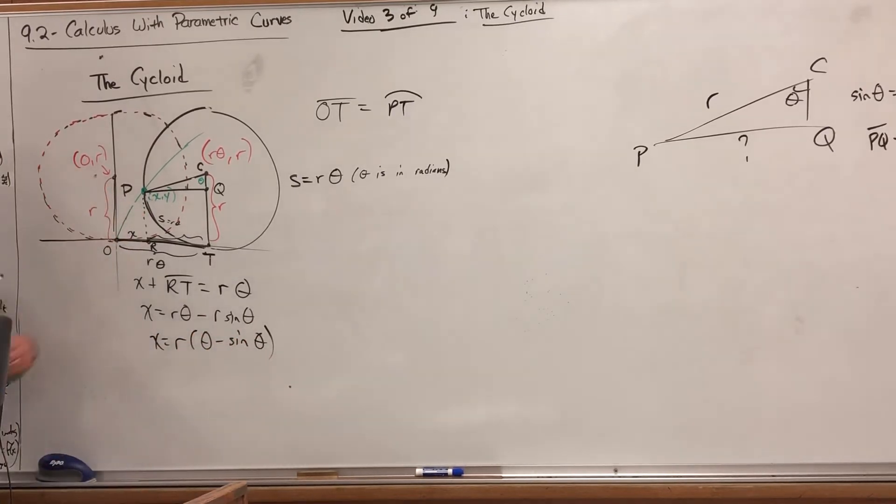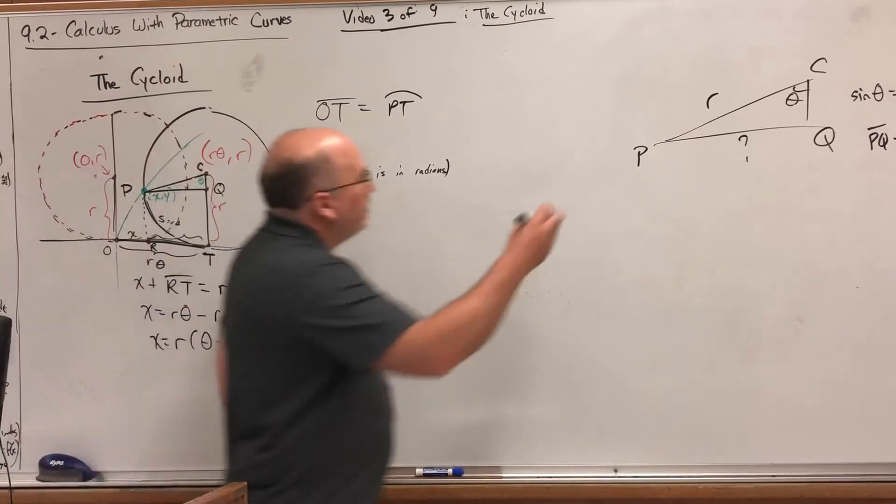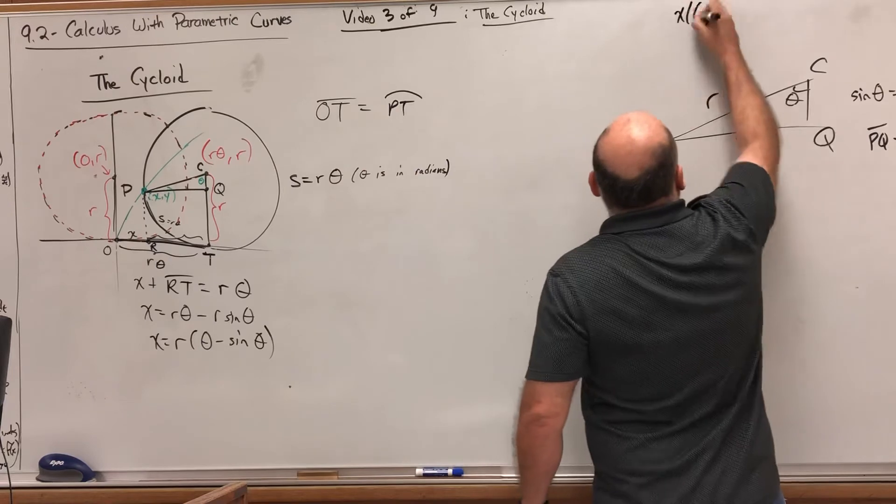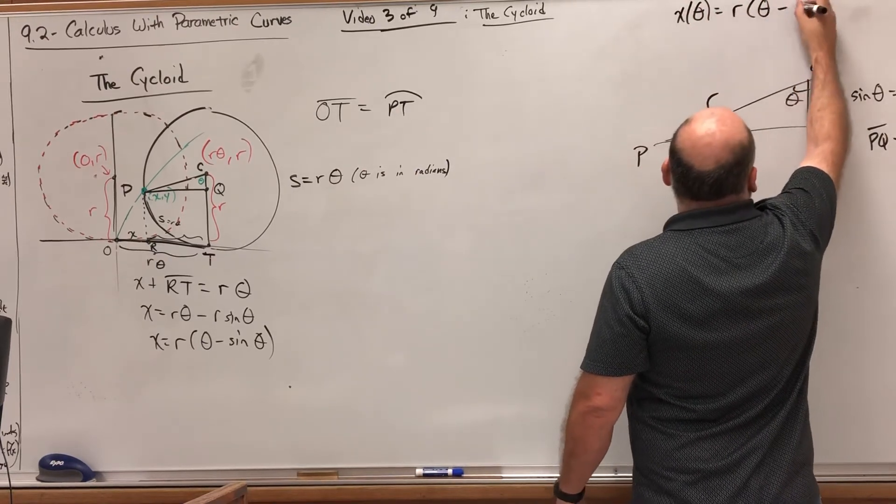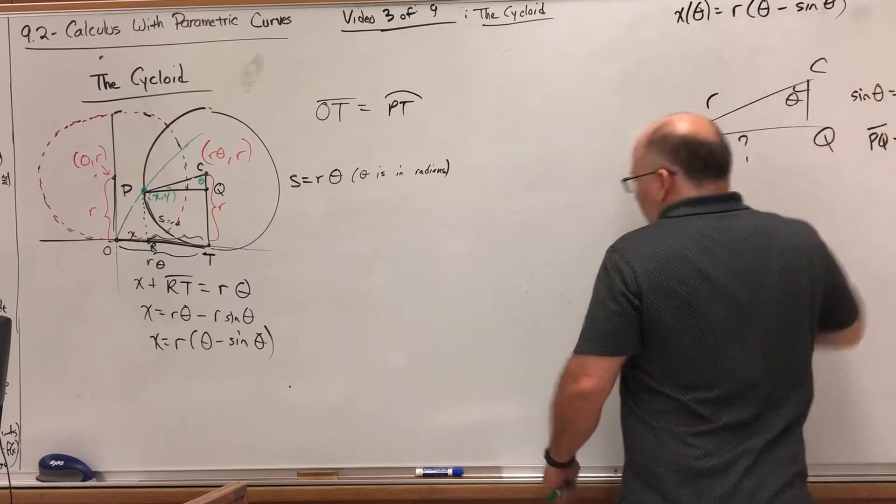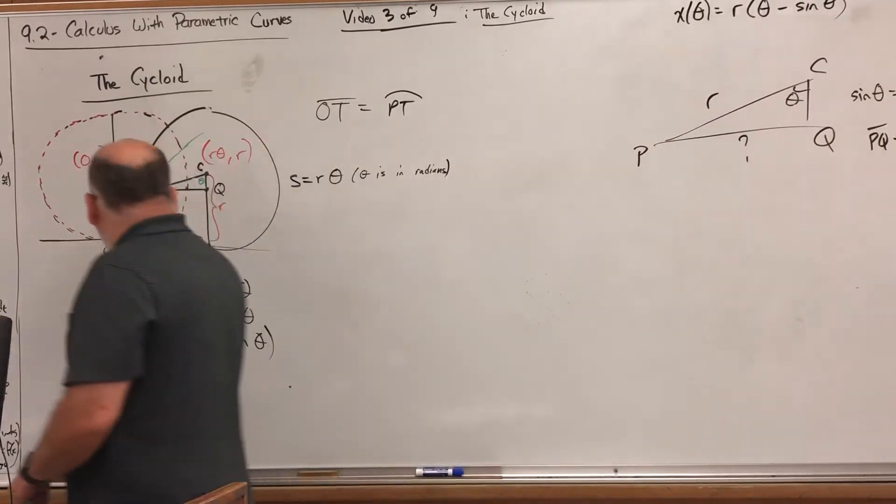But PQ is the same as RT, which means I can replace RT with r sine theta. Just for kicks and giggles we'll factor out the r. Just like that, we have the x-coordinate of this point after rotating the circle an angle of theta radians as a function of theta. So x of theta equals r times theta minus sine of theta.